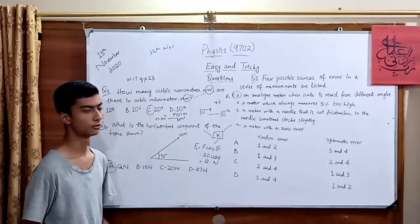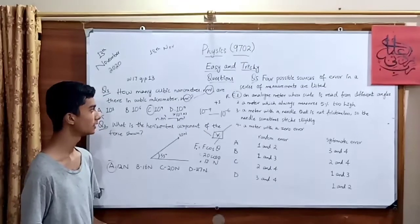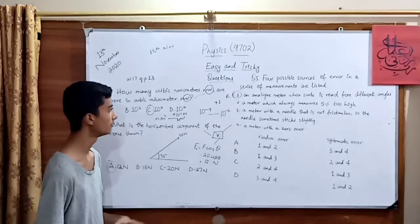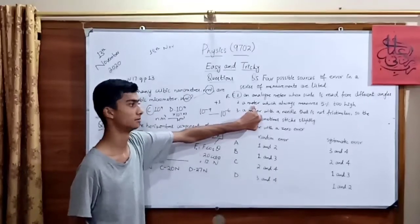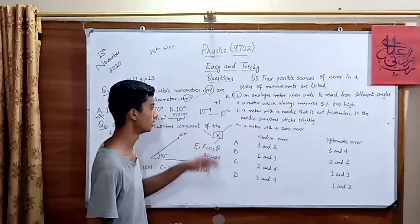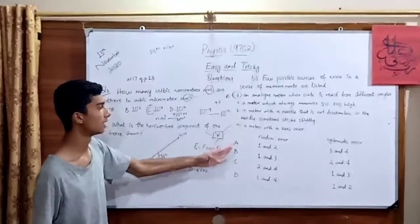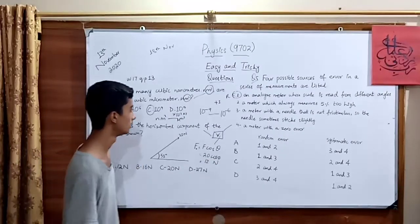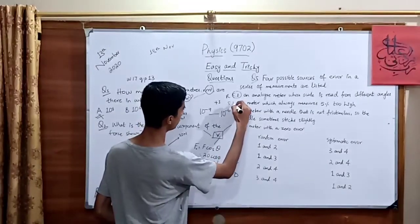Now moving towards option number 2. A meter which always measures 5% too high. 5% too high means that a meter which has a systematic error. So there is a systematic error in this meter. There is nothing else written which could be said about the mistake of any human, so it could be considered as systematic error.